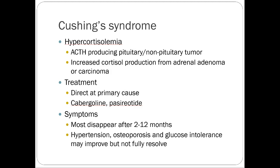Cushing's syndrome is hypercortisolemia — usually caused by an ACTH-producing pituitary or non-pituitary tumor, or increased cortisol production from an adrenal adenoma or carcinoma. Treatment is directed at the primary cause — chemotherapy or surgery. Most symptoms including hypertension, osteoporosis, and glucose intolerance improve after 2 to 12 months once the underlying cause is managed. Cushing's is rare and a complication of certain diseases, but these side effects are manageable.